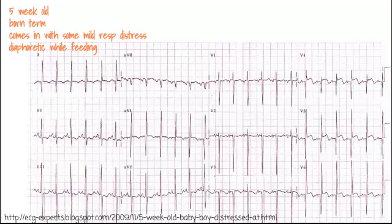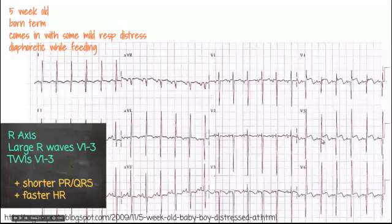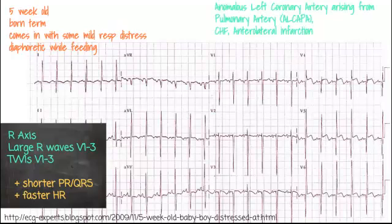Let's apply what we've learned. A five-week-old, previously healthy term baby presents with mild respiratory distress. Looking at the EKG: we expect a right axis, but we're upright in lead I and roughly isoelectric in aVF — no right axis deviation. In V1 through V3 we see S wave predominance rather than large R waves, and T waves that should be inverted in a five-week-old are not. We also see ST elevation. This is clearly abnormal. This patient was diagnosed with anomalous left coronary artery arising from the pulmonary artery (ALCAPA), with anterolateral infarct and signs of CHF.